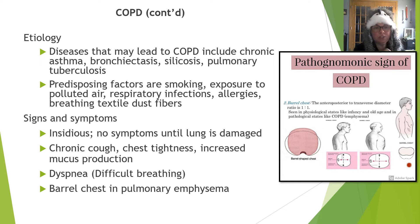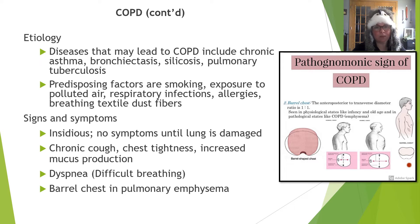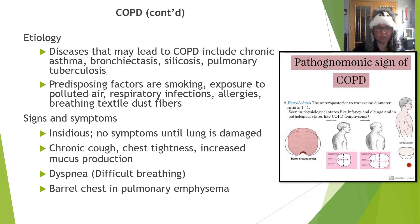Etiology of COPD arises due to diseases like chronic asthma, bronchiectasis, silicosis, and pulmonary tuberculosis. Predisposing factors include smoking, exposure to polluted air, respiratory infections, allergens, and breathing textile dust fibers. Signs and symptoms can be insidious, slow, and progressive until lung damage sets in — chronic cough, chest tightness, increased mucus production, dyspnea, and the barrel chest — seen with pulmonary emphysema. The barrel formation occurs because the lungs are working much harder.